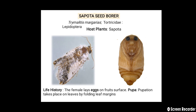The second pest is Sapota seed borer, that is Trimelitis margigares. It belongs to the family Tortricidae, order Lepidoptera, and the host plant is only Sapota. In the life history, the female lays eggs on the fruit surface and pupation takes place on leaves by folding the leaf margin. Here you can see the adult moth and pupa of the Sapota seed borer.